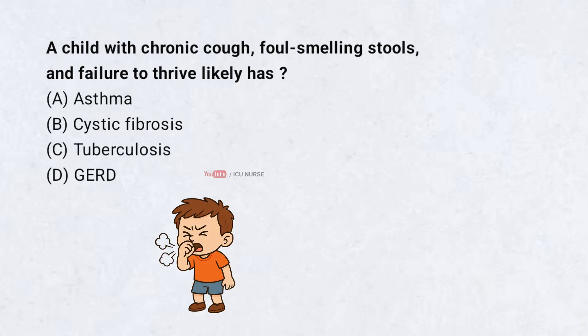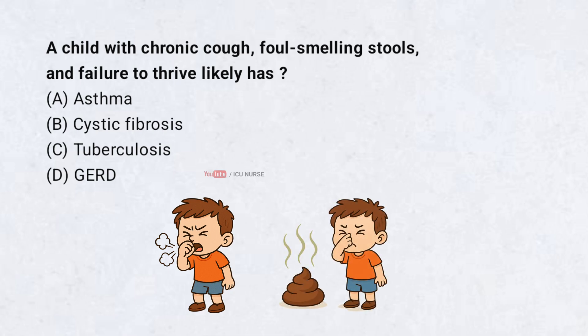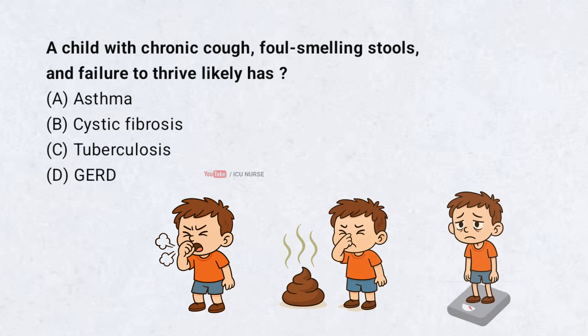A child with chronic cough, foul-smelling stools, and failure to thrive likely has: A. Asthma. B. Cystic fibrosis. C. Tuberculosis. D. GERD. Correct answer: B. Cystic fibrosis.